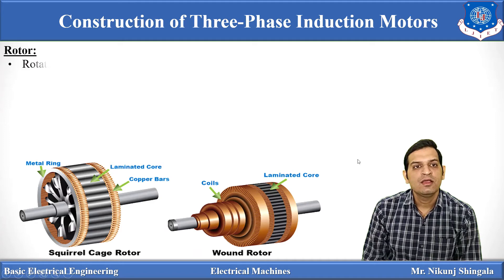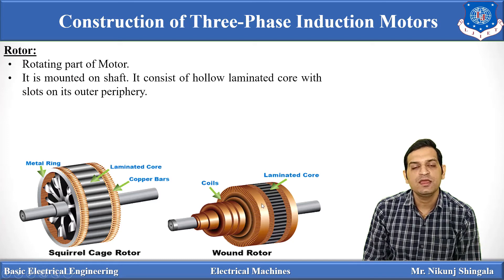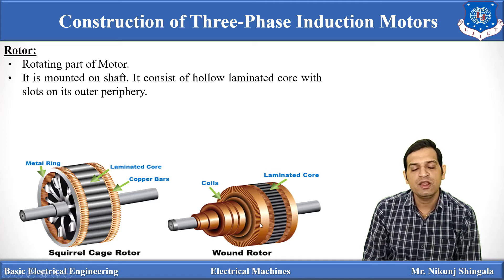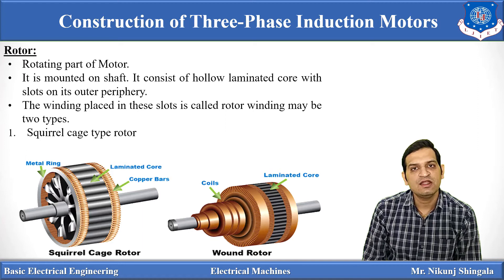The rotor is the rotating part of the motor. There are two types of rotor for the three-phase induction motor: the squirrel cage type rotor and the wound type rotor. It is mounted on the shaft. The construction of the rotor core is a hollow laminated core with slots on the outer periphery — whereas in the stator, slots are on the inner periphery. In the rotor slots, copper bars or windings are placed, called rotor winding. Based on the type of rotor winding, there are two types of rotor: squirrel cage type and wound type.